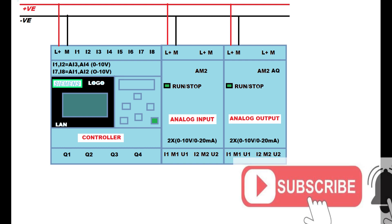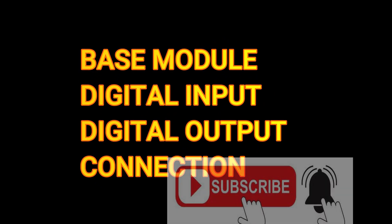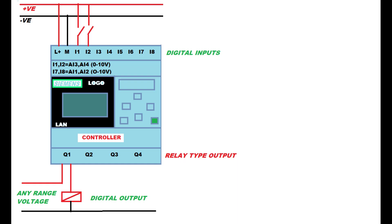in small automation applications. We will see one by one: base model digital input output connection as well as extension analog input output conditions. In the base model we have some digital inputs and related outputs. Also in the base model there are four analog inputs available.